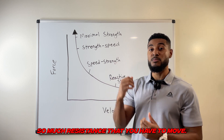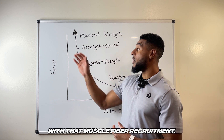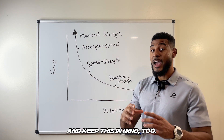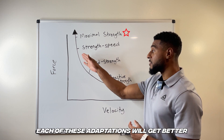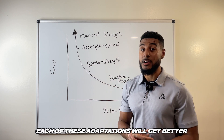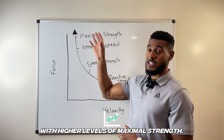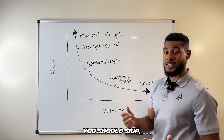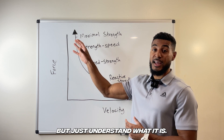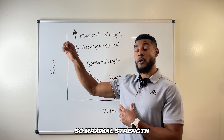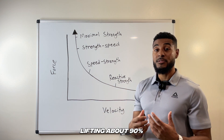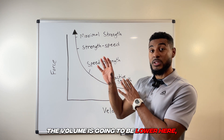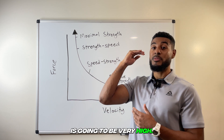It's not fast enough to elicit those velocity adaptations, but because there's so much force and resistance that you have to move, it's really going to help with muscle fiber recruitment and your neural drive. Keep in mind that each of these adaptations will get better with higher levels of maximal strength. So even if you want to get faster, you shouldn't skip it. Maximal strength — lifting about 90% or more of your one rep max — will have lower volume but very high intensity.